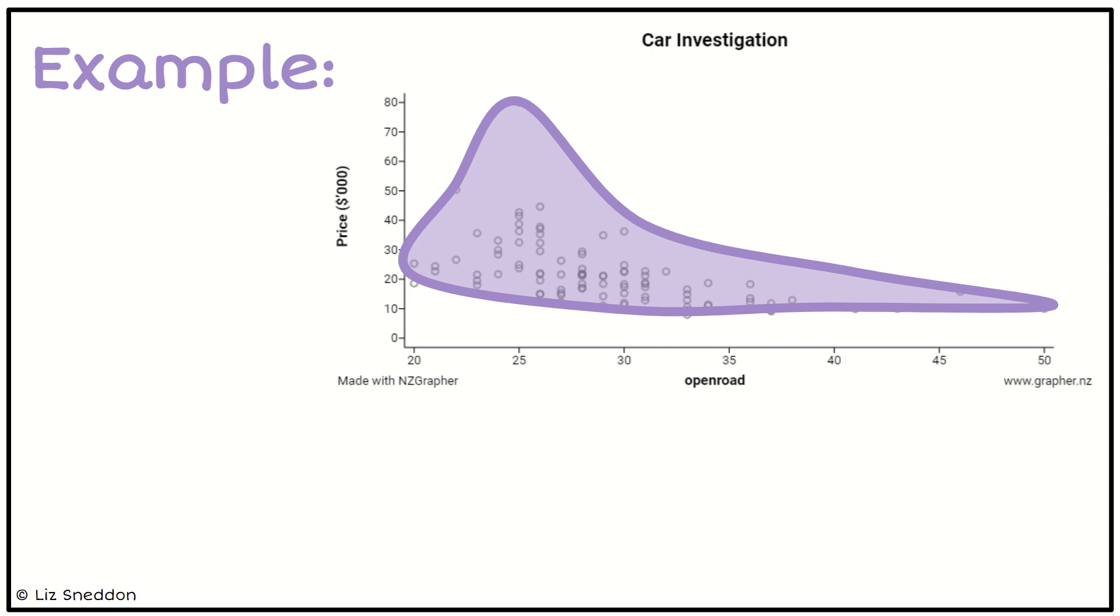I can see for low fuel efficiencies there's quite a lot of variation in the price. For fuel efficiencies that are in the middle, there's a moderate amount of variation in the price.